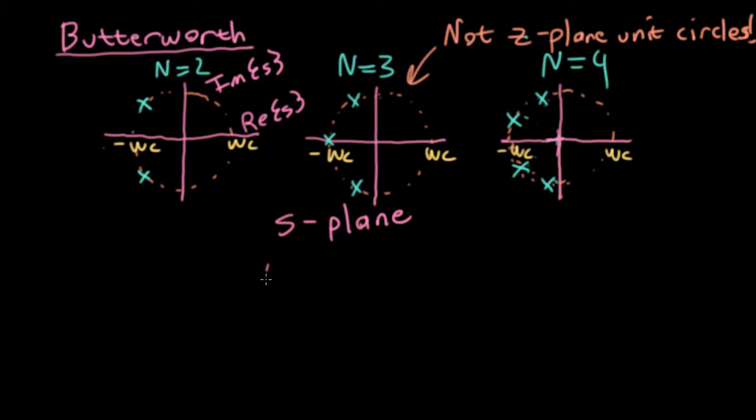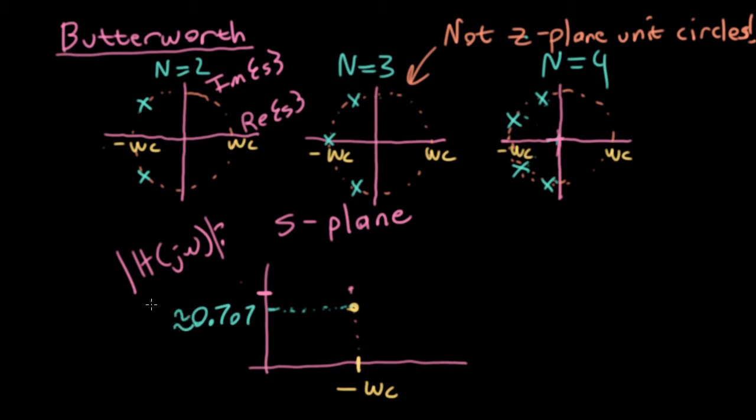So if we look at this in the frequency domain, the magnitude of one of these filters has the characteristic that for any particular n, they're all monotonically decreasing. We have a half power cutoff point that's at minus omega c. I'm drawing the magnitude here on a linear scale.